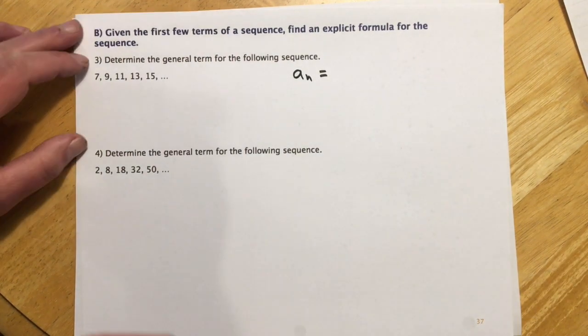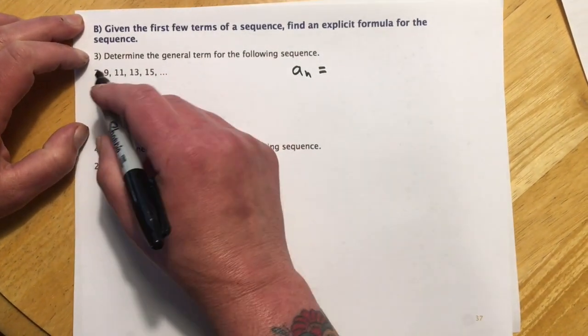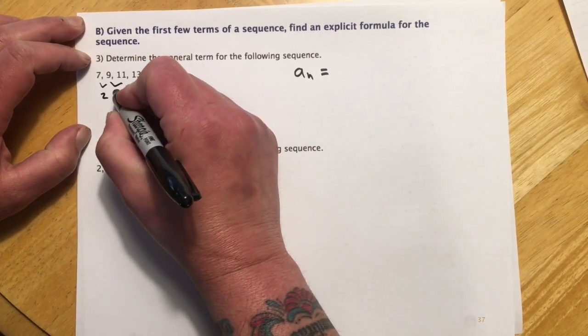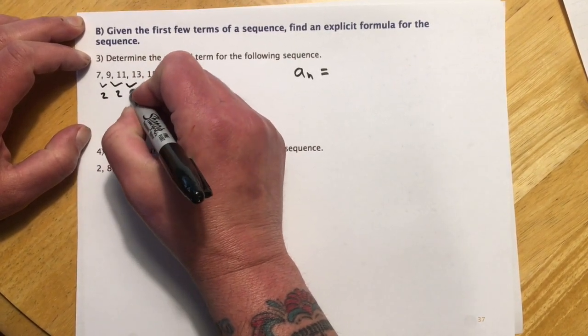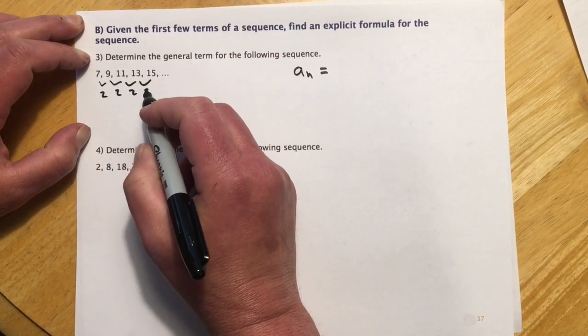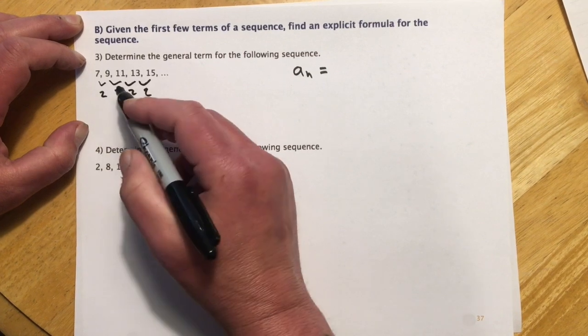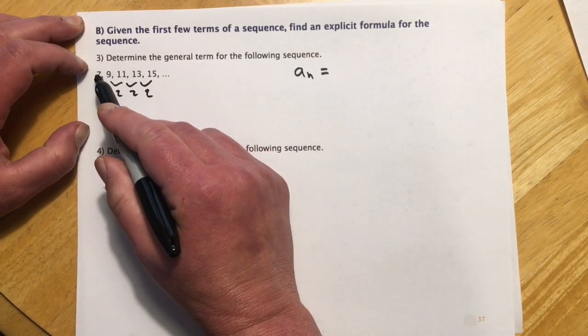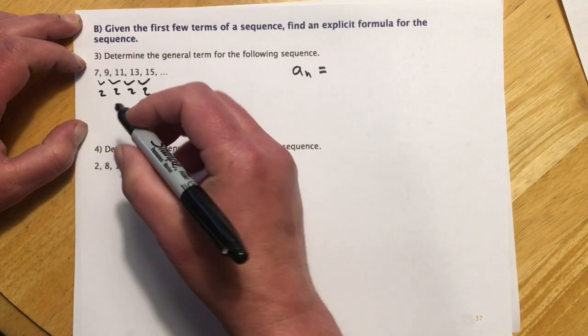One technique you can do is look for a common difference if it happens to be linear. If you look at this one, 2 apart, 2 apart, 11 to 13, 2 apart, 2 apart. And so these are increasing by 2 every time. And what we have to do is figure out, so if we're going to increase by 2, how do I get a 7 by plugging in a 1?